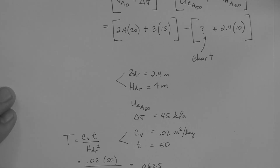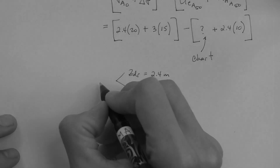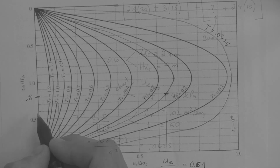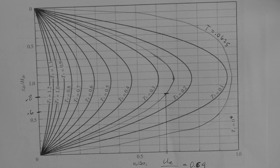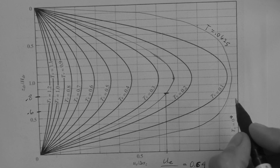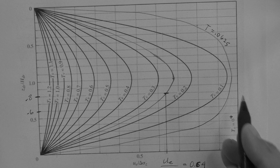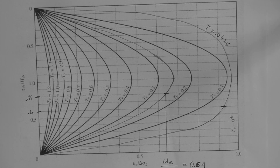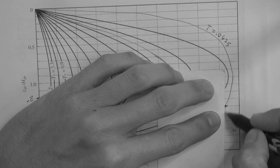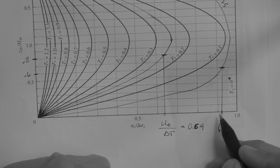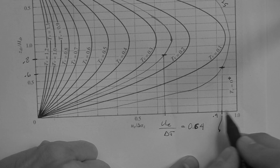Now let's determine the y-axis value for our point: Z_DR divided by H_DR equals 2.4 divided by 4, which is 0.6. The x-axis value — u_e divided by delta sigma — is what we read from the chart. Moving horizontally from y equals 0.6 until we hit the isochrone for T_v equals 0.0625, then dropping down to the x-axis, we read approximately 0.93.